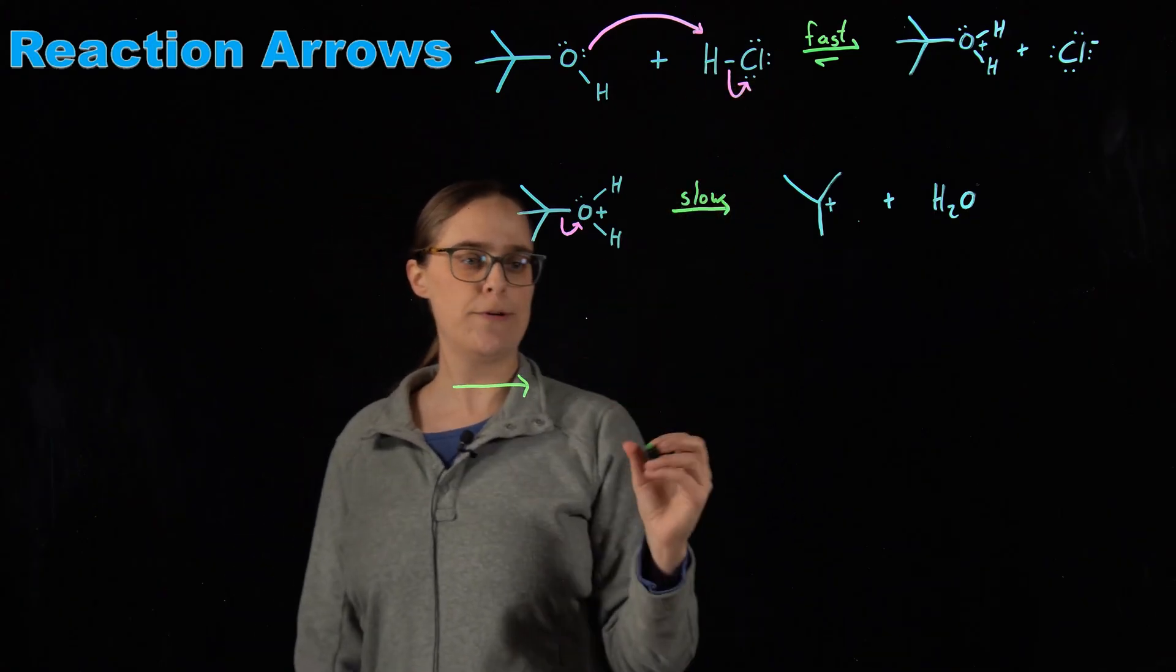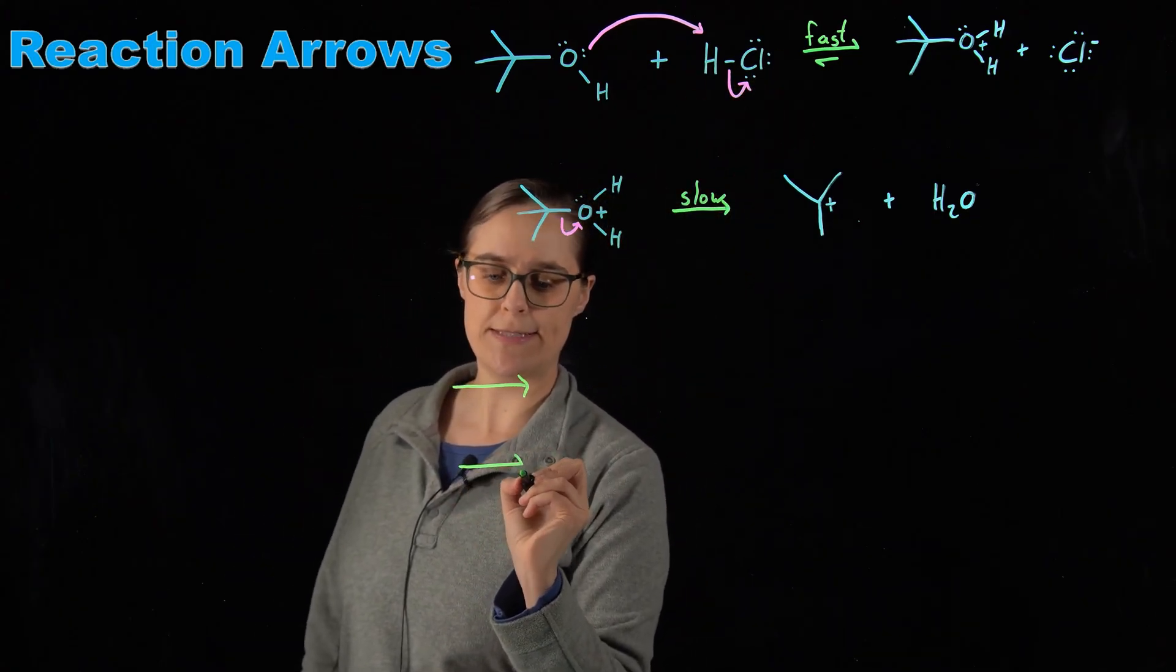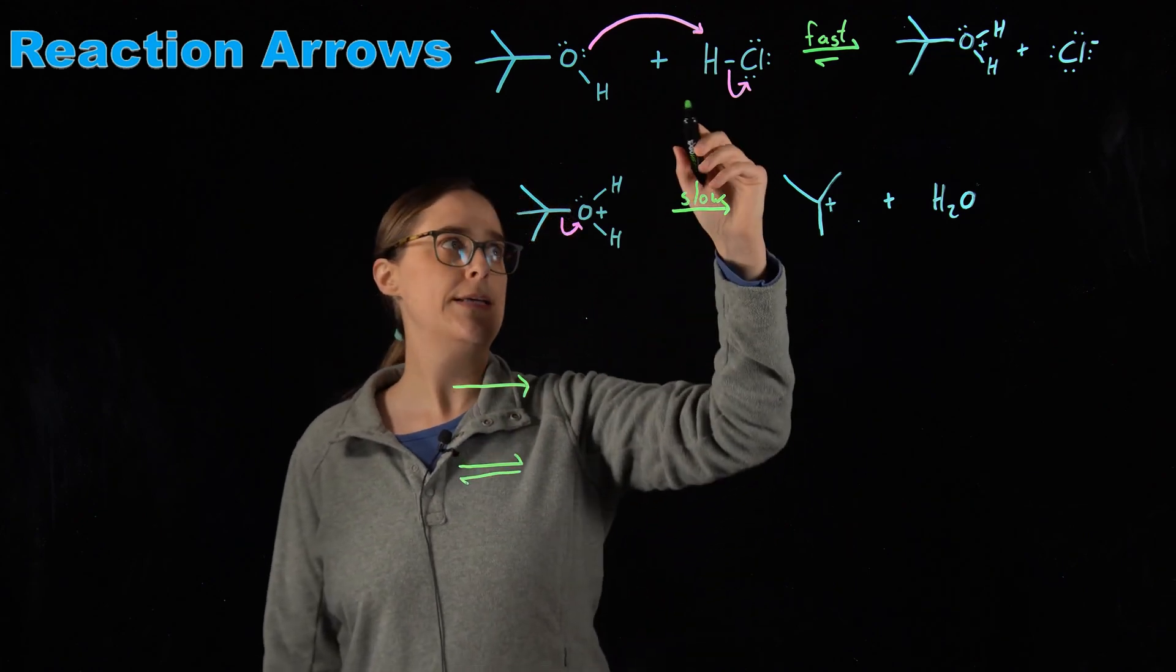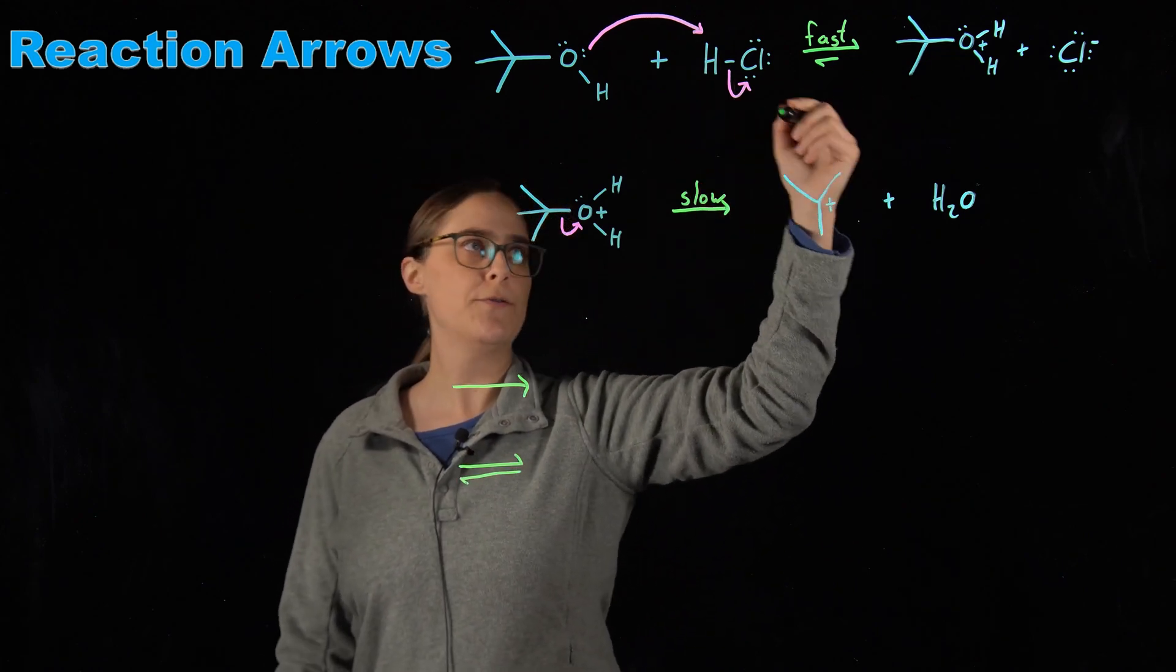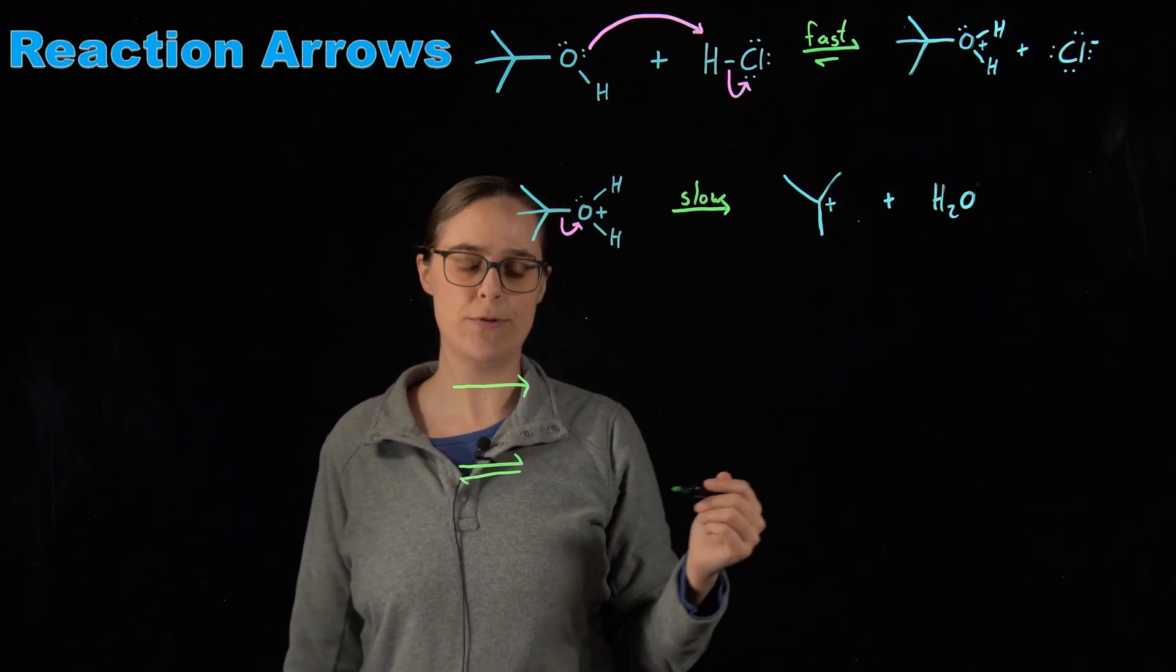The two directional arrows imply that that step is reversible. There is an equilibrium here. Reaction is occurring in both directions.